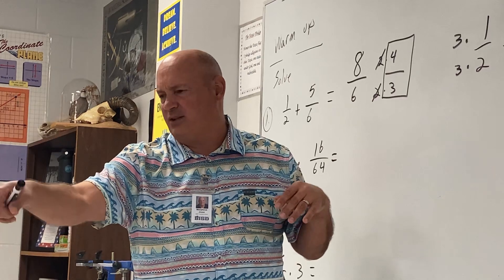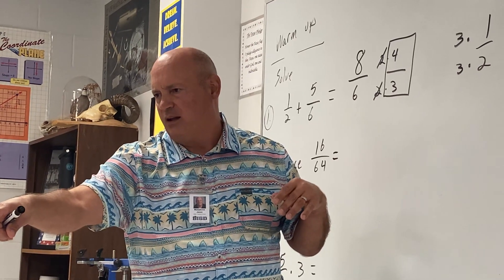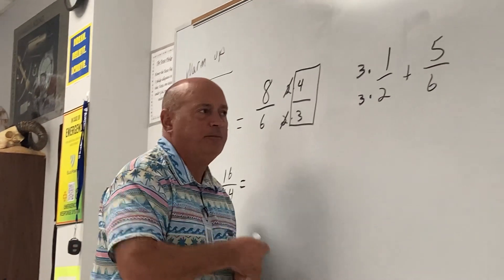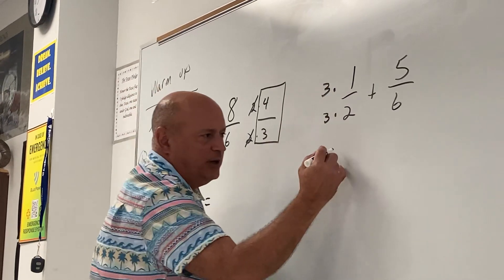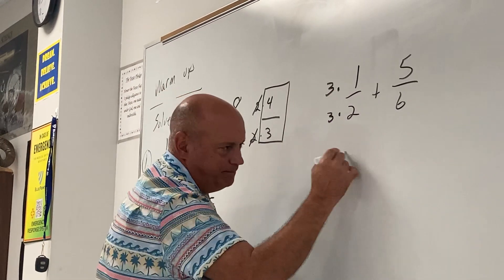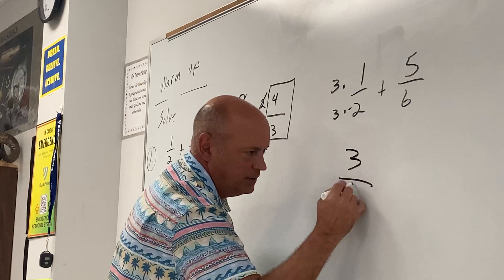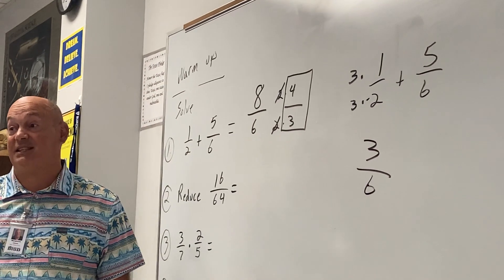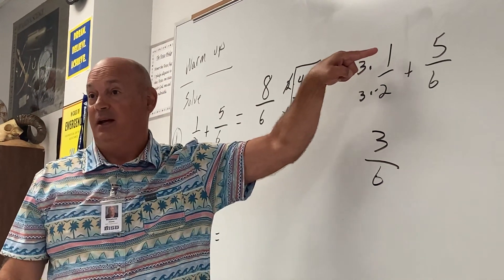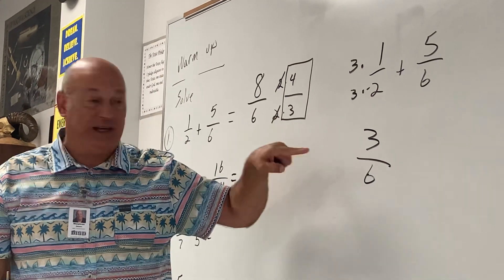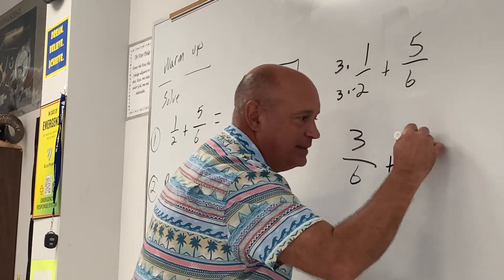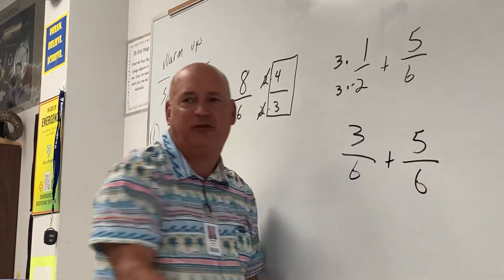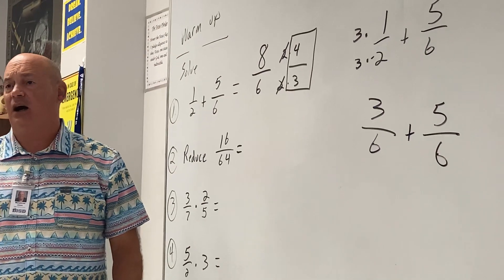So you can multiply it by whatever. Now, you're going to change the way it looks. It's going to look different now, but it's still going to be the same proportion. And I don't know. What did you say? I forgot. Good. So, this is now going to look like, what's three times one? What's three times two?